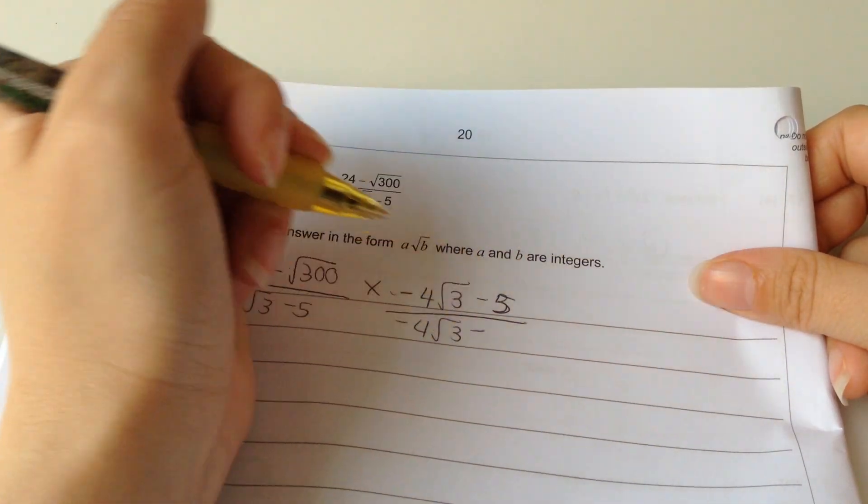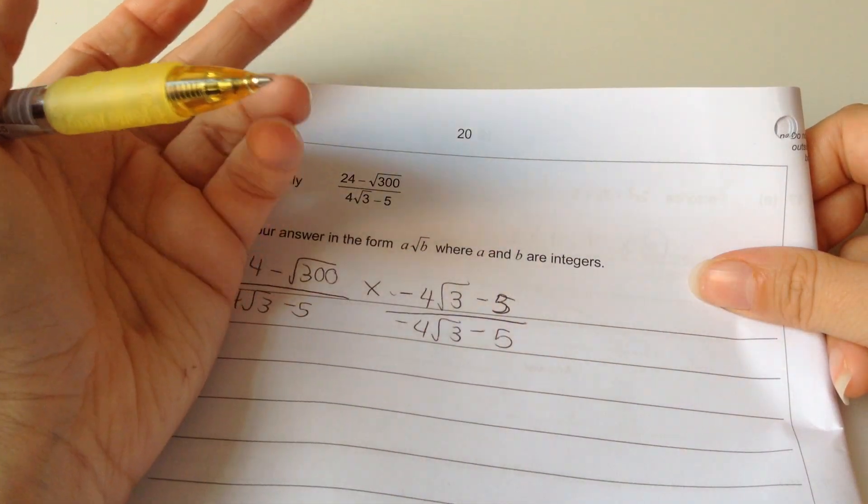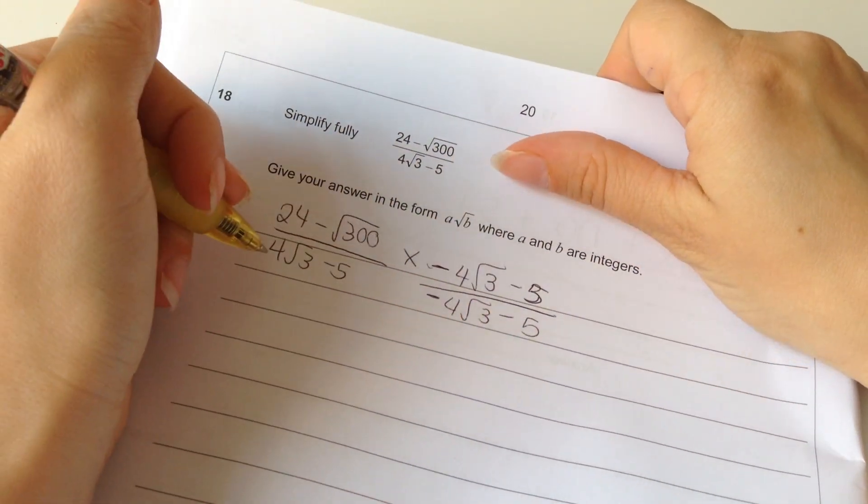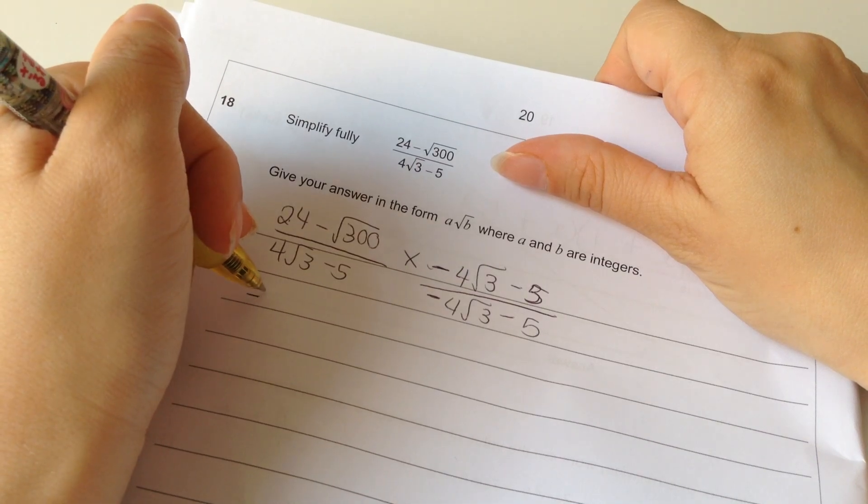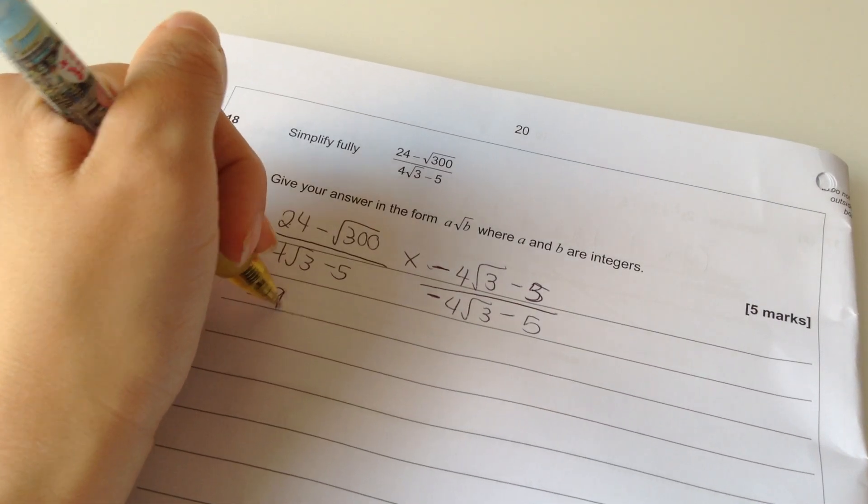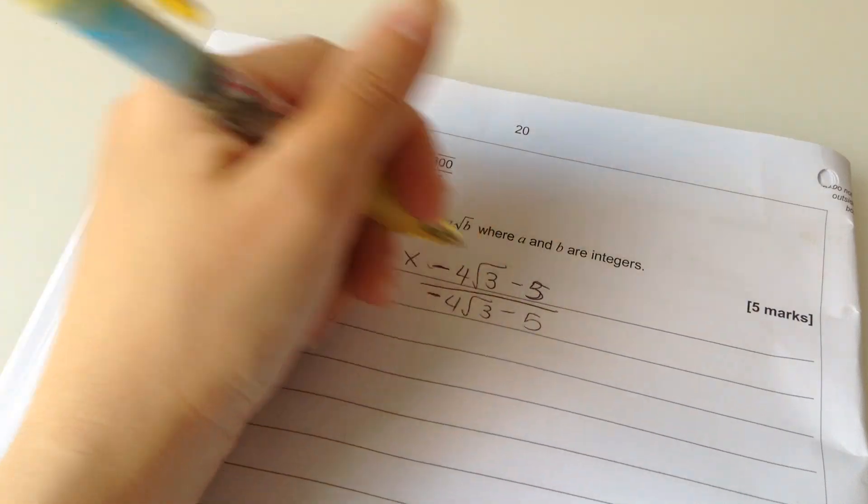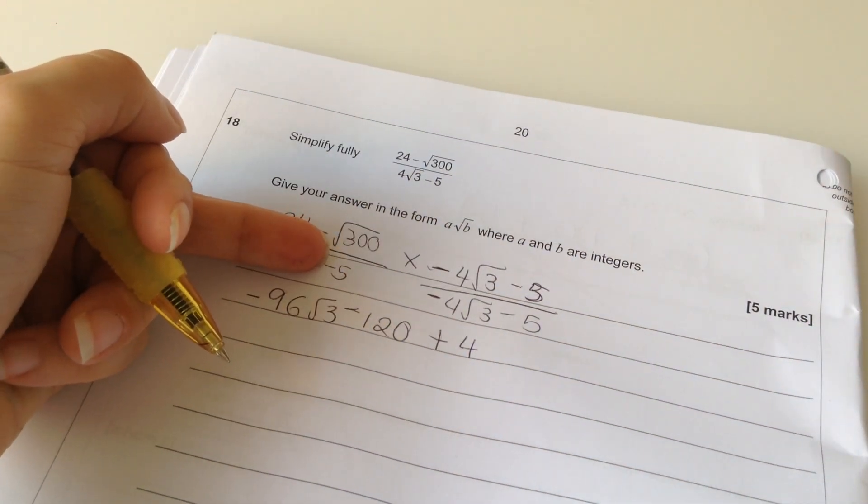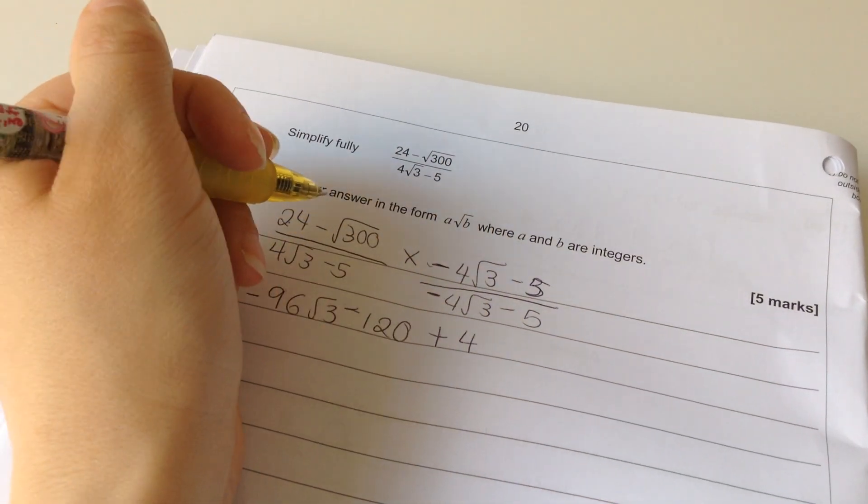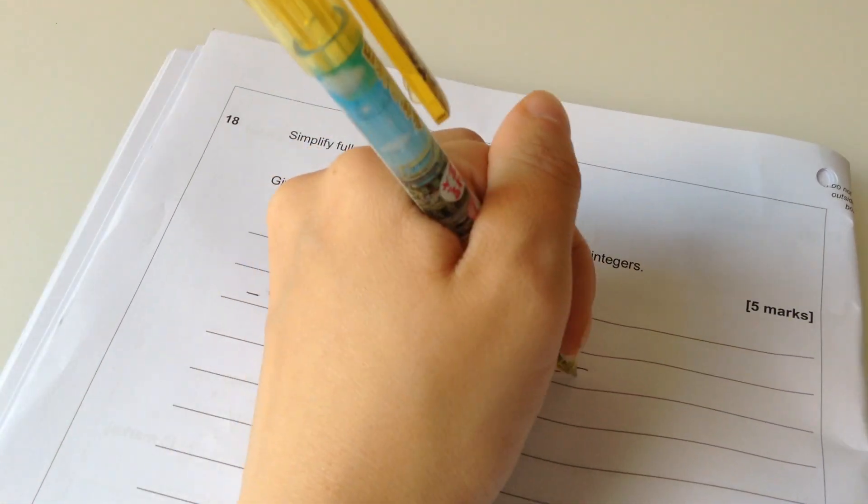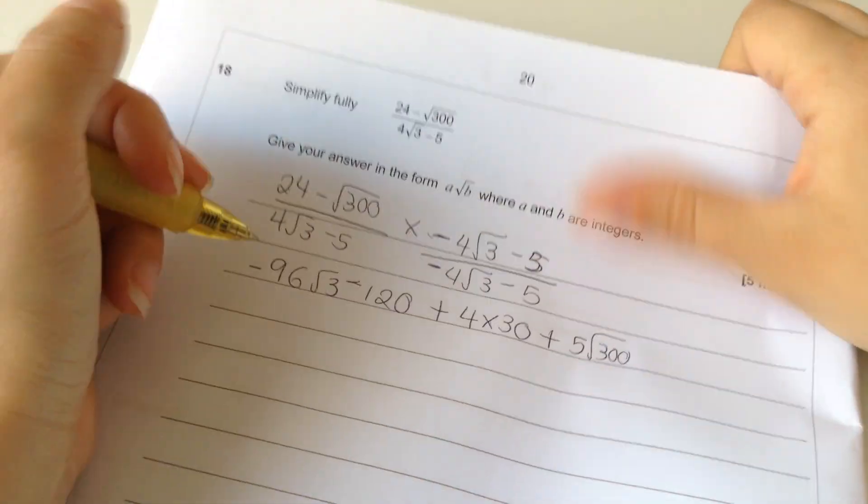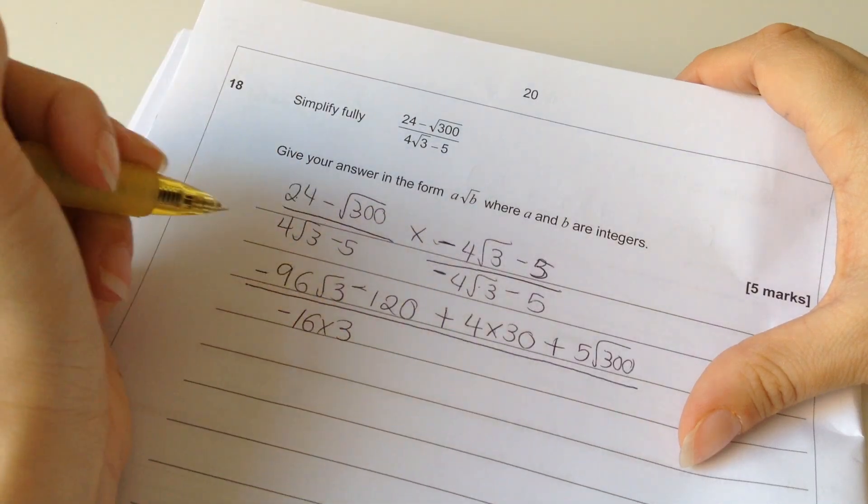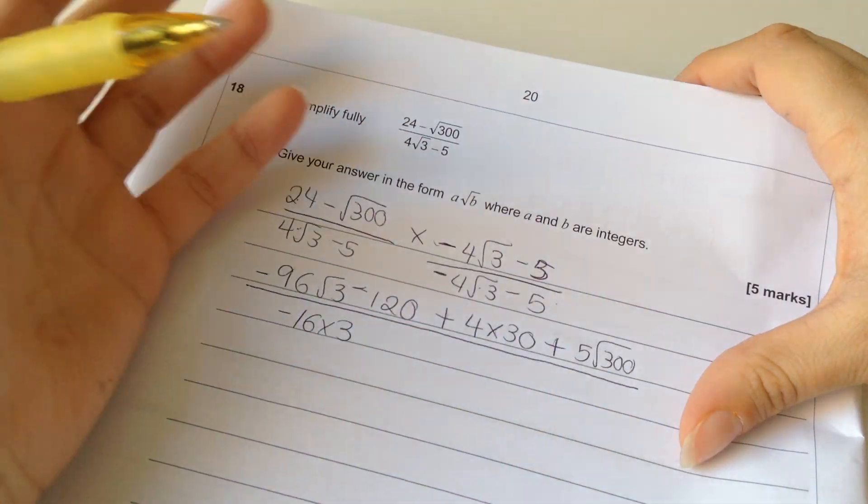So, yeah. Thank you to Husnane, who pointed that out. Not the Husnane in year 10, if you're wondering. That would be really weird if he was correcting me on further maths, given he's only had one lesson of further maths. Okay. So, 24 times minus... That's minus 96 root 3. Minus 120. Plus... Right. What's root 3 times root 300? That's root 900. Is that 30? Yeah, that's 30. So, that's 4 times 30. Plus 5 root 300. Maybe I should have simplified the root 300 first. Oh, well. And then, that times that is going to make minus 16 times 3. And then, that times that and that times that are going to cancel. And then I've got plus 25.